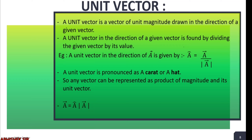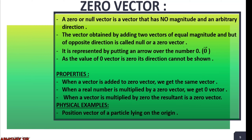Another type of vector is the zero vector. A zero vector is ultimately a vector whose value we cannot determine — it might be zero — that is why it is named zero. A zero or null vector is a vector that has no magnitude and an arbitrary, meaning random or no, direction.